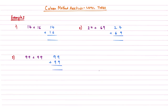This is Column Method Addition Level 3, so let's talk about what is different in this level as opposed to all the others. In Column Method Addition Level 2, we introduced the concept of what happens when the sum of one column is 10 or above, and we looked at what happens when it is one of the last columns and we have to write a digit underneath an invisible column.